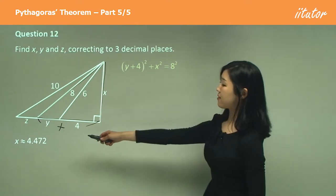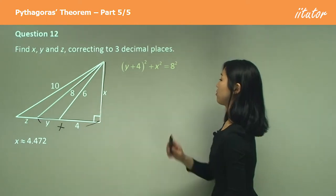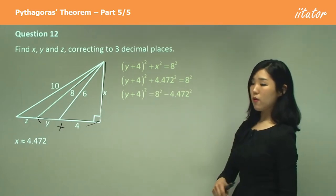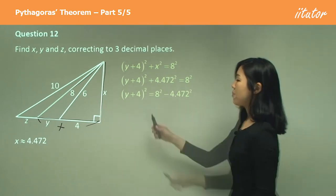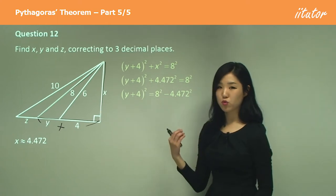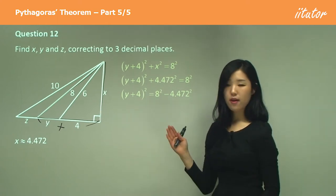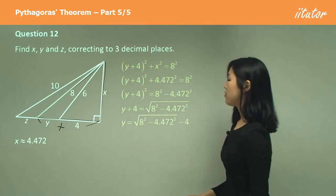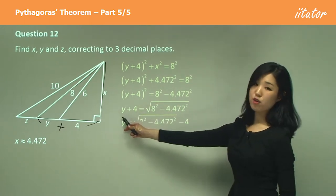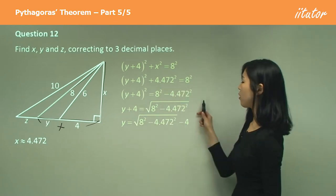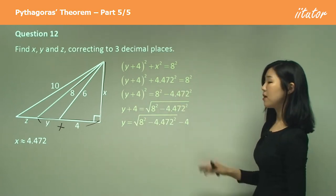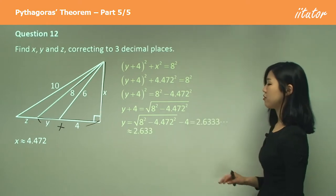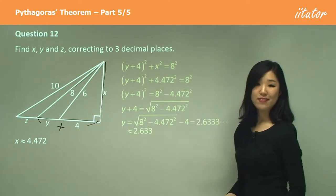Now we've found x. x is 4.472. So substitute that in. Move it to the other side, so I have this by itself. Because we don't want y plus 4 squared, let's get rid of the square. Square root it, so I can get rid of that square. Move the 4 over to the other side because I just want y. Plug that into your calculator very carefully. That's what you should have. So to three decimal places, that's your answer.